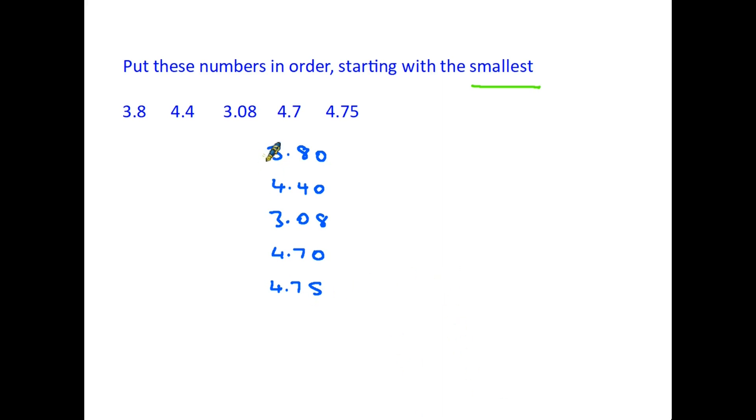This time we are looking for the lowest number first. Again we are looking at the first column, the whole numbers. In this case we have three, four, three, four, and four. So one of the threes must be the lowest number. Because they are both three, we look at the next column. This one has 3.8, this one 3.0. Ignore the next column, it is a far smaller number. So 3.0 is smaller than 3.8, therefore 3.08 is the smallest number.